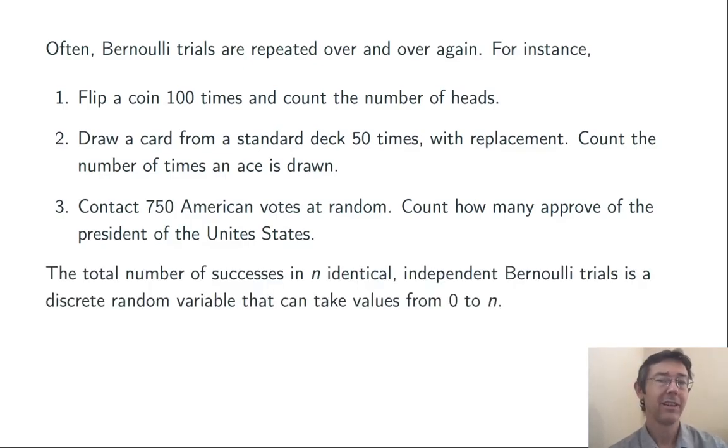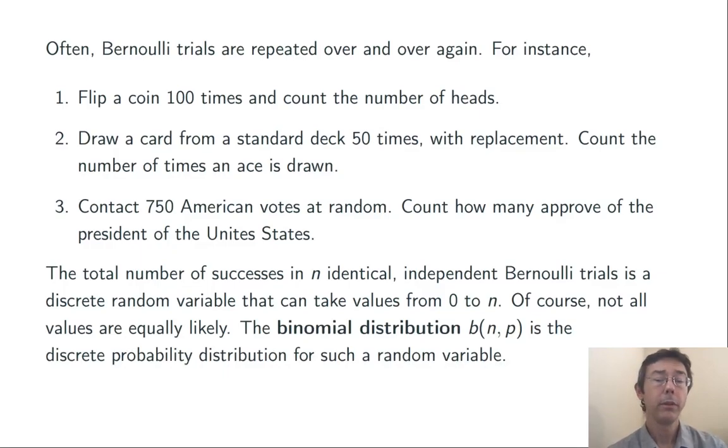The total number of successes in n identical independent Bernoulli trials is a discrete random variable and it can take values from 0 to n. We're doing n trials and counting the number of successes. Of course, not all of those values from 0 to n are equally likely. The binomial distribution, typically abbreviated b(n, p), is the discrete probability distribution for such a random variable. When we have n identical independent Bernoulli trials, each with probability of success p, and we're counting the total number of successes.